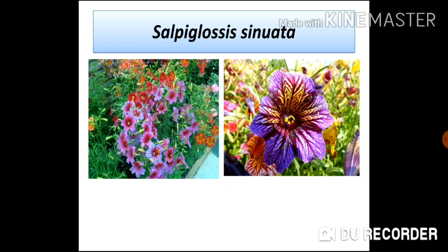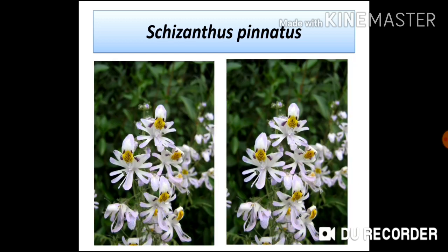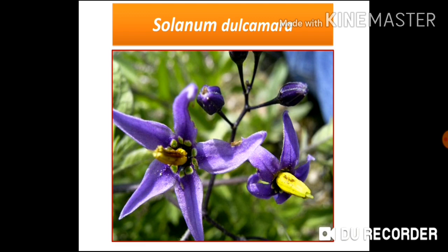Salpiglossis sinuata also has beautiful flowers and is in the category of ornamental plants. Schizanthus pinnatus is notable because, unlike most Solanaceae members which have five stamens, it is an exception with only two stamens. It has attractive flowers that draw insects for pollination and is planted in gardens. Solanum dulcamara is also an ornamental plant with beautiful violet-colored flowers, showing the cone-like shape of fused anthers.